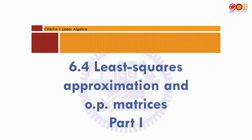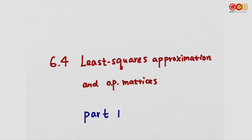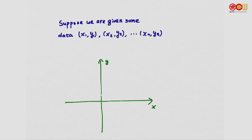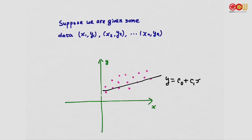Section 6.4: least squares approximation and orthogonal projection matrices. Suppose we are given some data (x1, y1), (x2, y2), ..., (xn, yn). We can plot the data on the xy-plane. What we want to know is: is it possible to find a line y = c0 + c1*x that best fits the data?